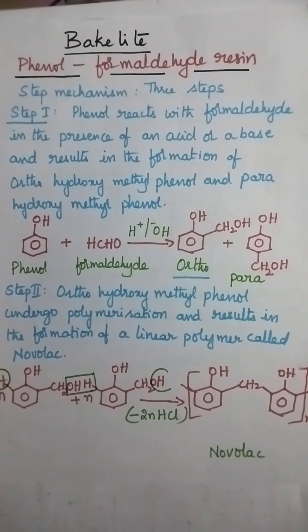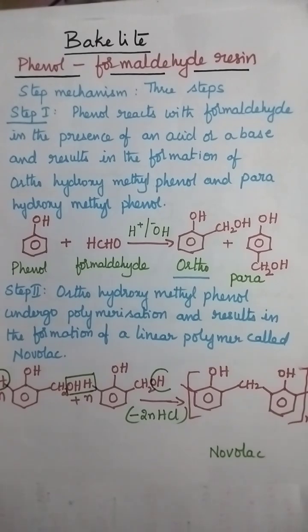It involves a step mechanism. In the first step, phenol reacts with formaldehyde in the presence of an acid or a base, resulting in the formation of two isomers known as ortho-hydroxymethylphenol and para-hydroxymethylphenol.